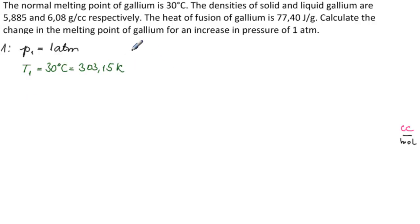Our level 2 is an increase in pressure of 1 atmosphere. So that means P2 is equal to 2 atmospheres, 1 atmosphere plus 1 atmosphere. And T2, we don't know what it is. We need to find T2, but in the end, we're interested in what the difference is between T2 and T1.